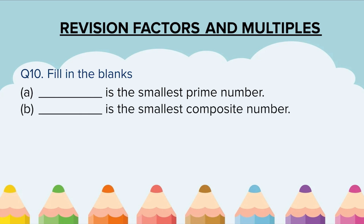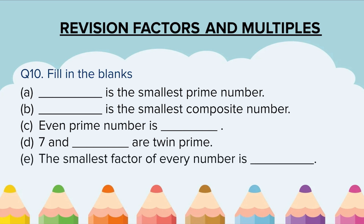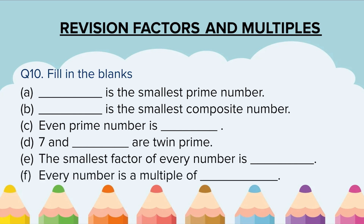Dash is the smallest composite number. C. Even prime number is dash. There is only one even prime number — you have to write that. D. 7 and dash are twin prime. E. The smallest factor of every number is dash.